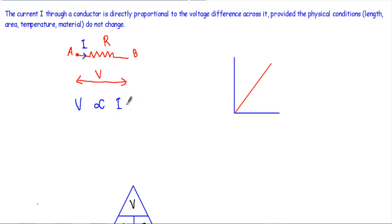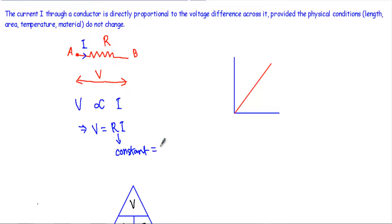I can write this as V proportional to I. To remove the proportional sign, I put a constant R, giving V = IR. This R is a constant and represents the value of resistance. Now the current depends on the voltage — voltage is the independent parameter and current is the dependent parameter.